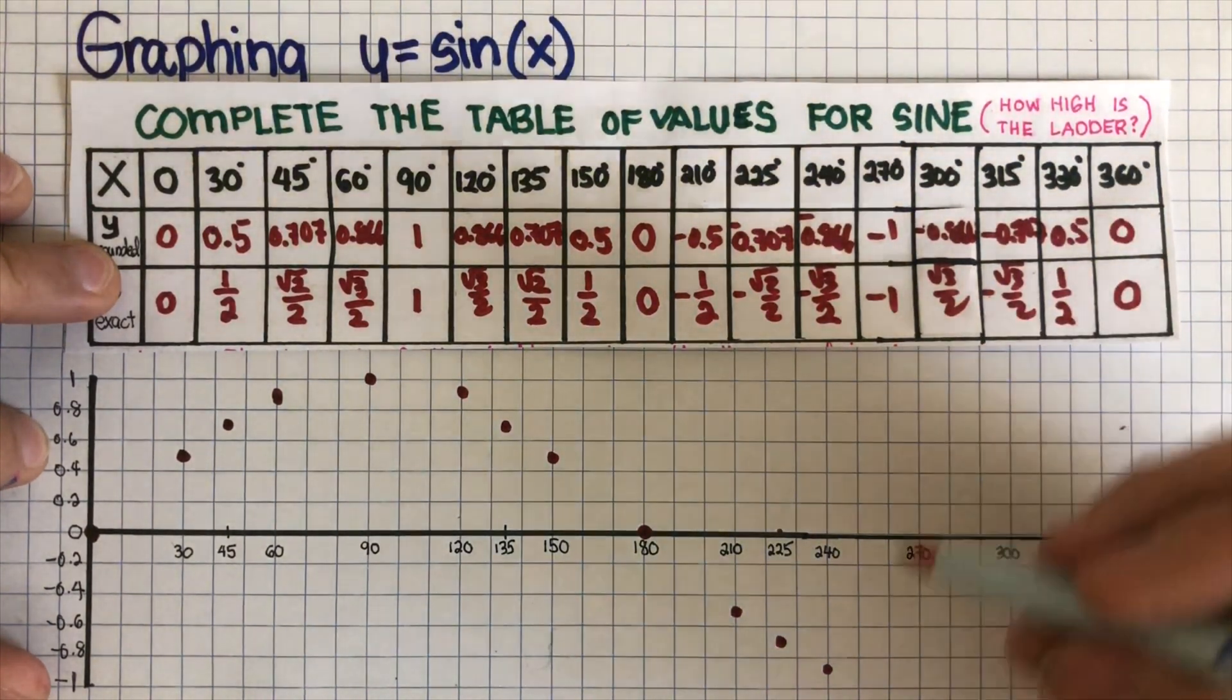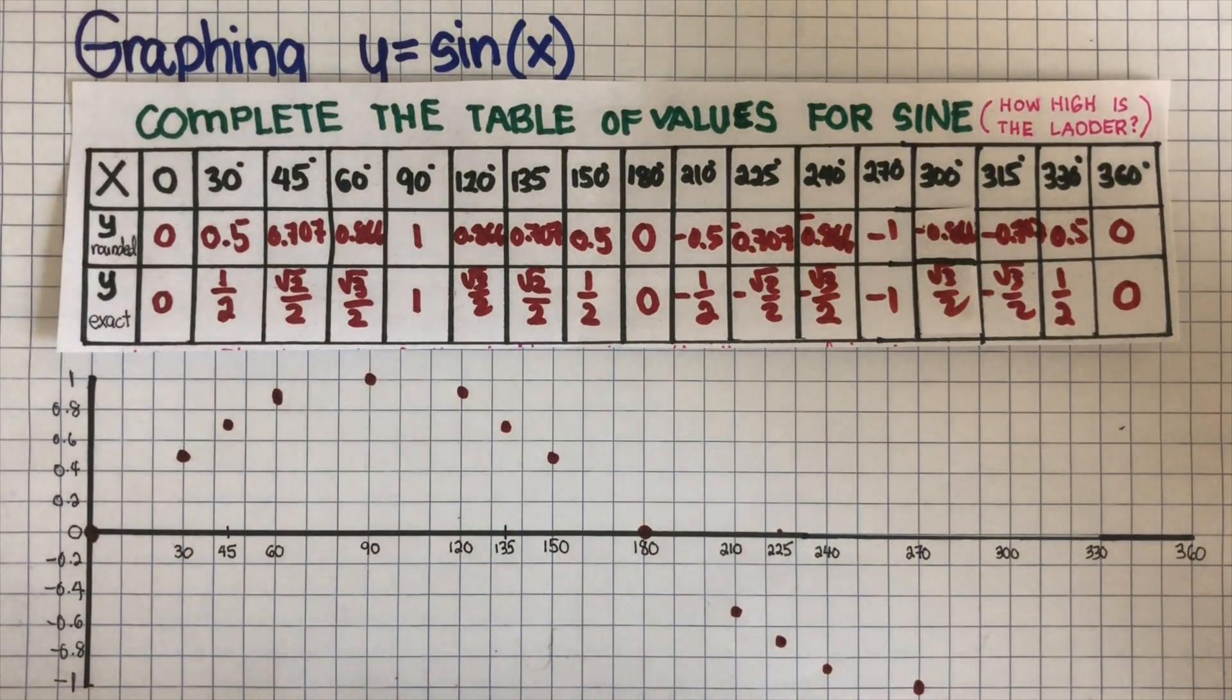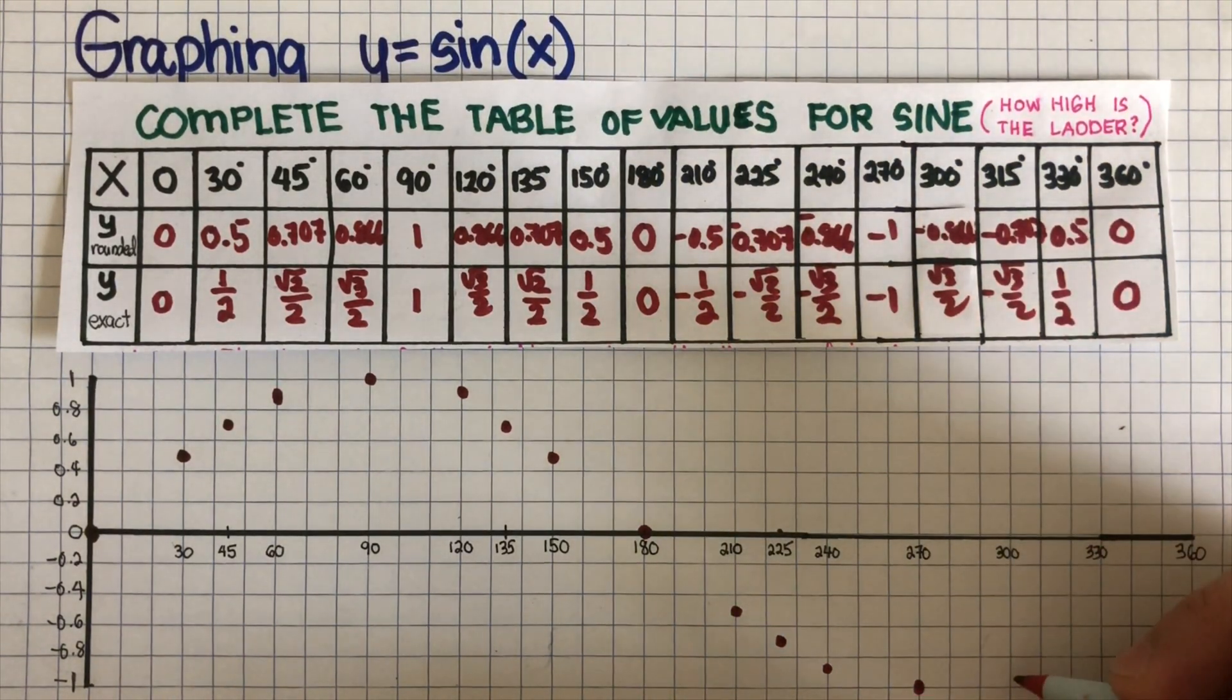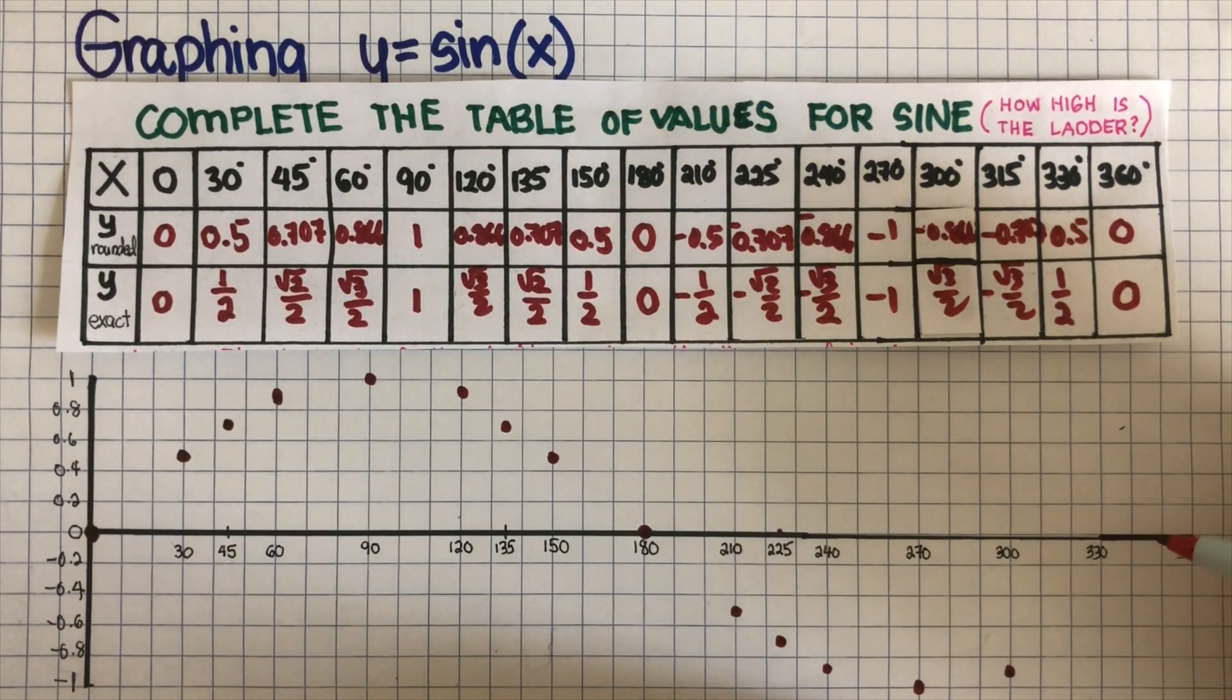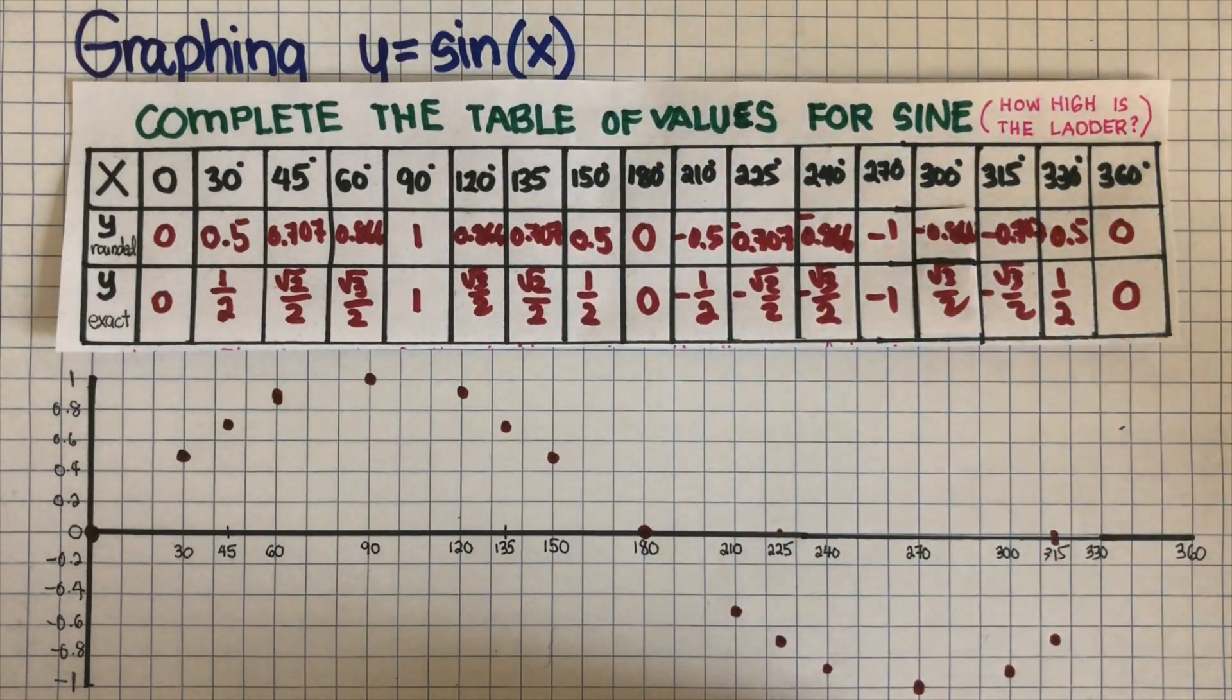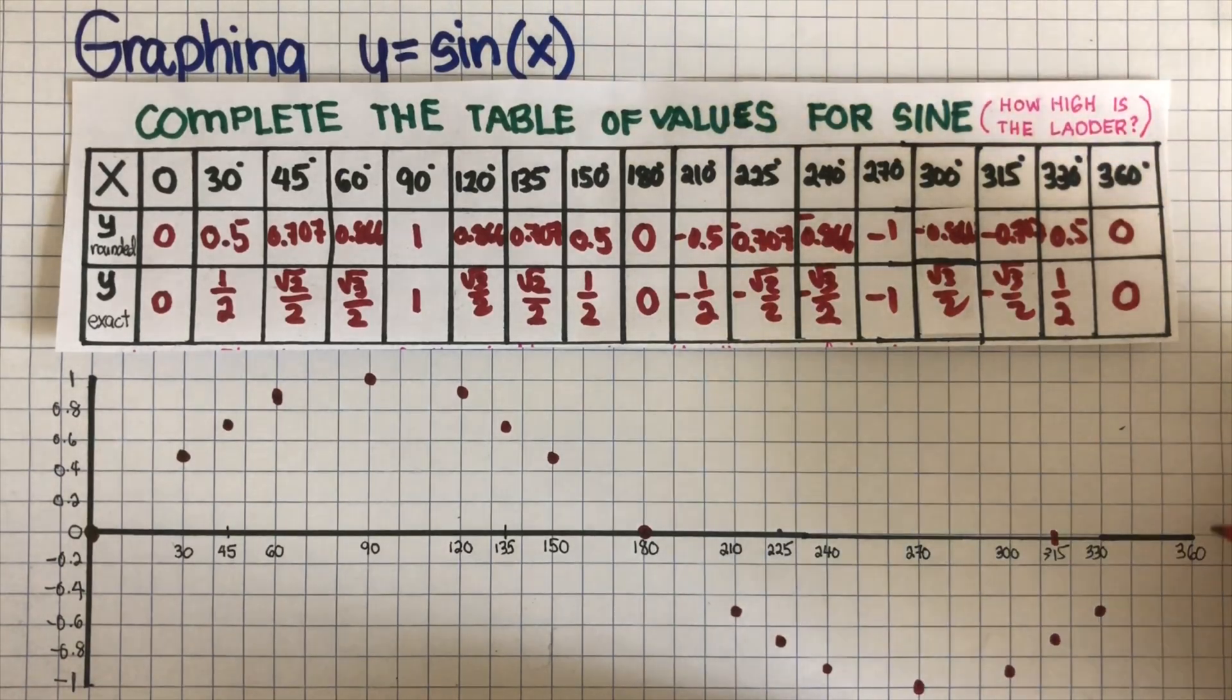Oops, I think I went off a little bit. So that's negative 1. And then 300 is negative 0.866, so we go back here. And then 315 is 0.707, it's right there. So there should be 315 over here. And then 330 is 0.5, and 360 is 0.